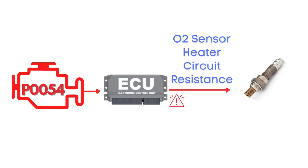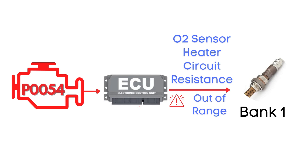This code is triggered when the engine control module detects that the resistance in the oxygen sensor heater circuit isn't within the specified range. Specifically, we're talking about the oxygen sensor heater circuit for bank 1, sensor 2.